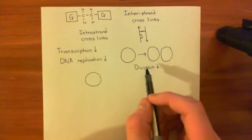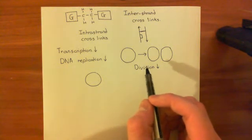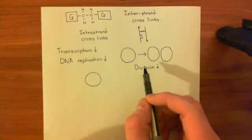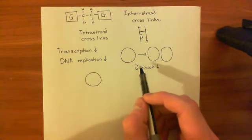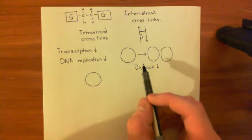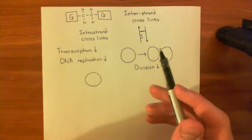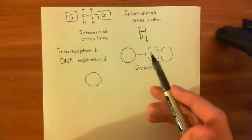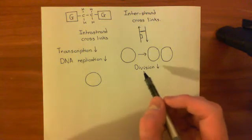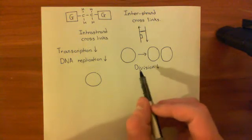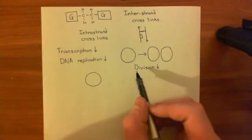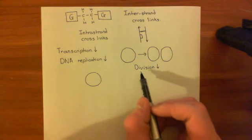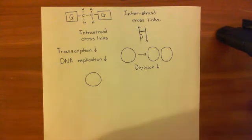This is also why these drugs cause side effects: there are cells in the body which are physiologically dividing rapidly, such as the cells that make your hair. If you stop them dividing very rapidly, you're going to stop them making your hair, giving rise to the famous side effect of anti-cancer chemotherapy — losing your hair. There are other examples of physiological rapid cellular proliferation that will also be affected.